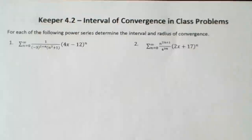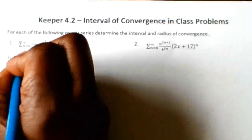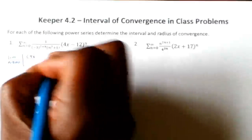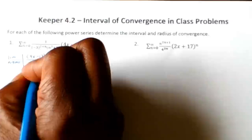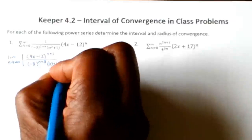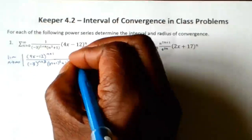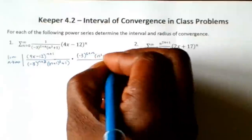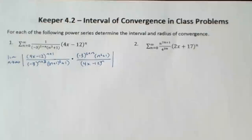Let's start number one. We have a long sum and I'm going to use the ratio test. For the ratio test, we have the limit as n goes to infinity of the absolute value, and we take the function with n replaced by n plus 1: we get (4x minus 12) to the n plus 1, all over (negative 3) to the n plus 3, times (n plus 1) squared plus 1. Then we multiply by the reciprocal of the original: (negative 3) to the 2 plus n times (n squared plus 1), all over (4x minus 12) to the n.